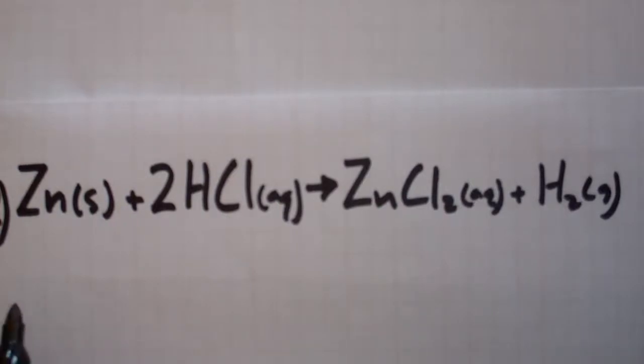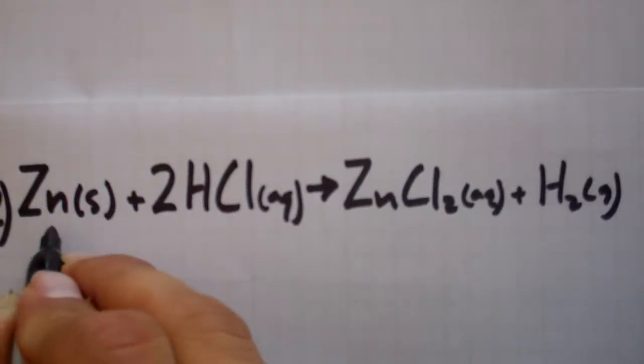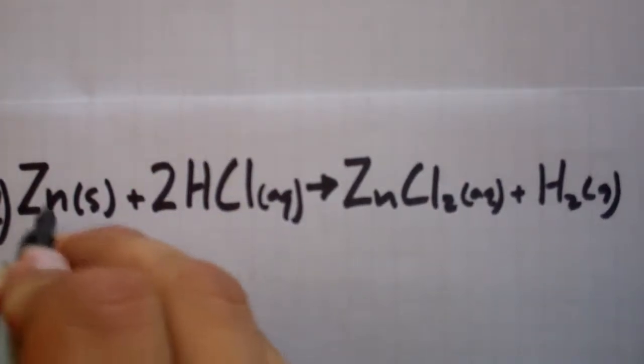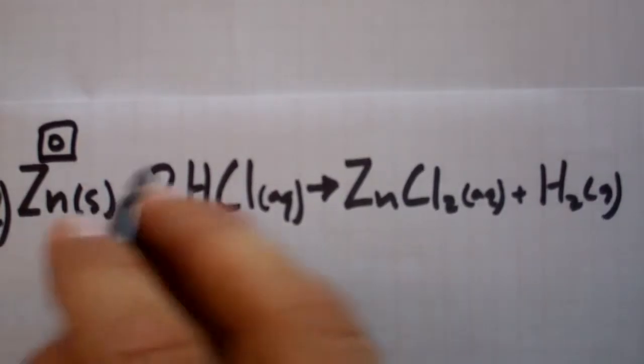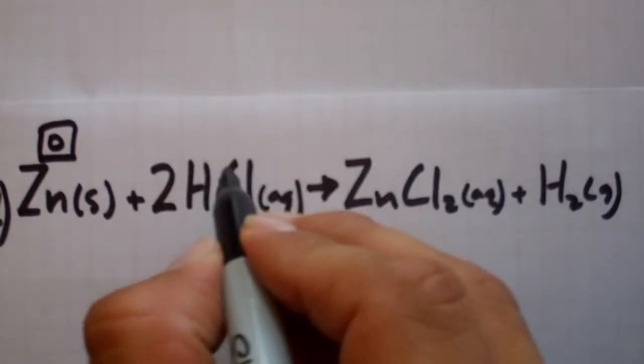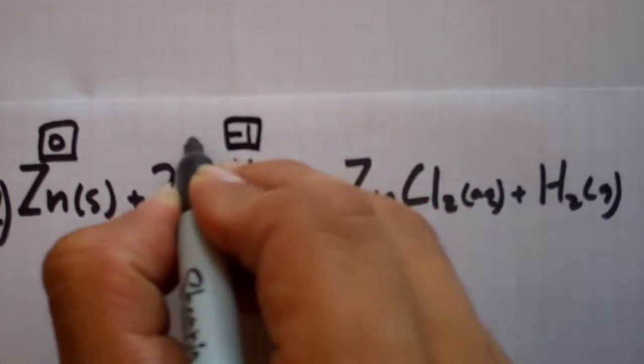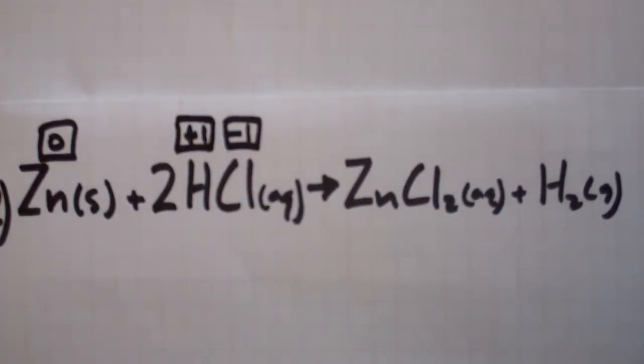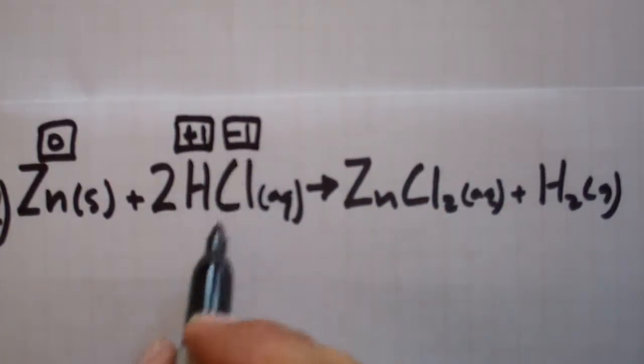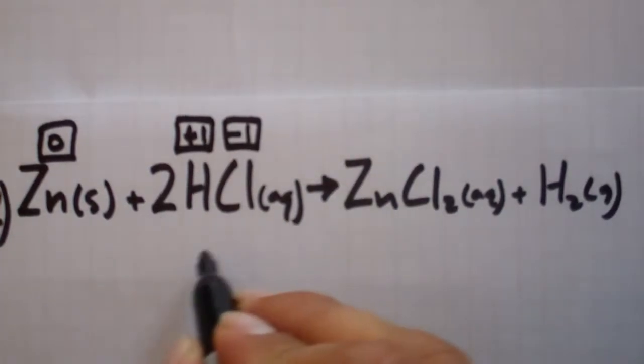First, the instructions were to find the oxidation numbers. Zinc as a metal, it's a pure elemental metal not in a compound, so it'll be zero. The second one is HCl. Cl is normally negative 1, and hydrogen is always plus 1 unless it's bound to a metal, which it isn't here. So plus 1, minus 1, and that all cancels out. Don't worry about the 2 in the front, you don't need it for finding the oxidation numbers.